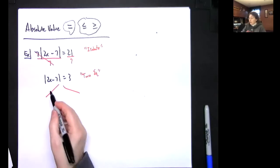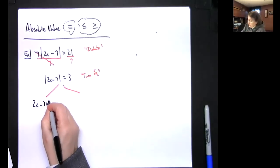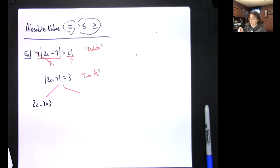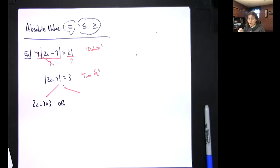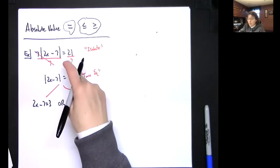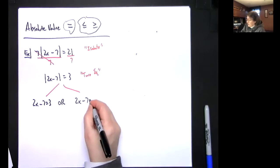Split this up into two equations. You write the first one without the absolute value bars, so 2x minus 7 equals 3. Since it's an equal it's always going to be in order. And then when you write it the second time, you drop the absolute value bars but then you make the 3 a negative, so 2x minus 7 is equal to negative 3.